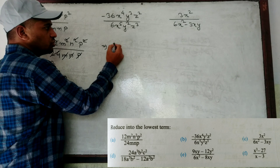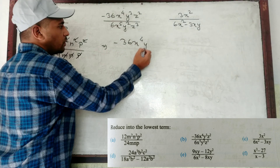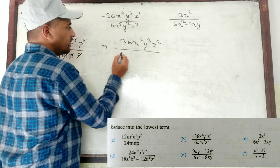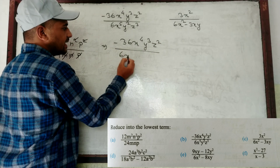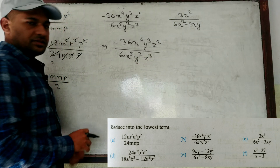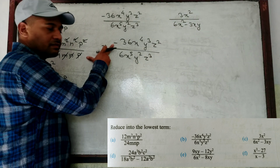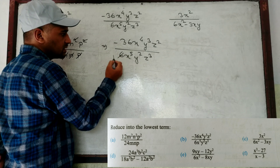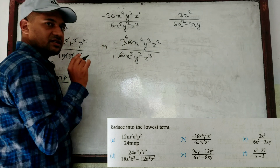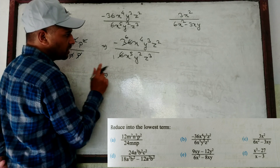Look at the next one. We have to reduce into lowest terms. Write down the question — don't cancel directly. The expression is 36X⁴Y³Z² divided by 6X⁵Y²Z³. Now there is a minus sign — no problem, leave it. First reduce the numbers: 6 goes into 36 six times, so we get 6.